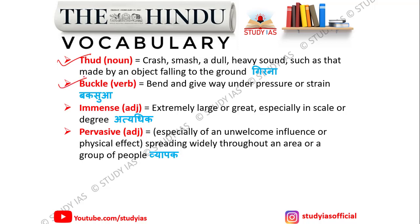Next word is buckle. Buckle means to bend and give way under pressure or strain — jhukna ya muda hua. Next word is immense. Immense means extremely large or great, especially in scale or degree. Atiyadhik — enormous.